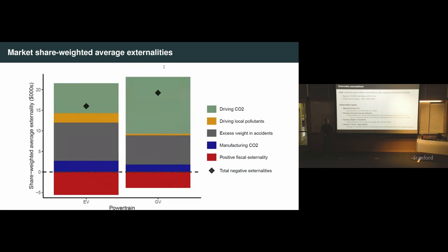The third externality is excess weight. If I drive a heavier car and I get in an accident, I have a higher chance of killing somebody. And the heavier my car is, the more likely I'm going to kill somebody if we get in an accident. The final thing we're going to calculate is what I'm loosely calling fiscal externalities. When I buy gas for my gas car, I'm paying a gas tax, and that's actually a benefit to the government budget.